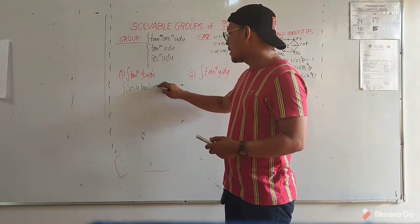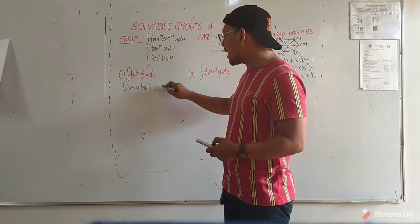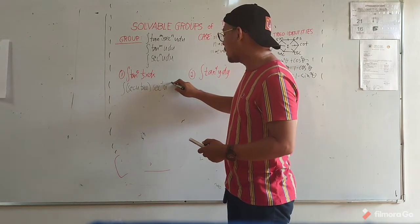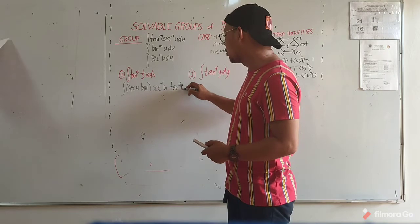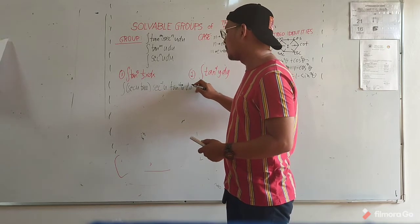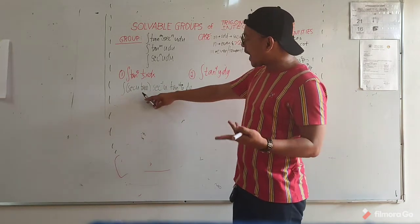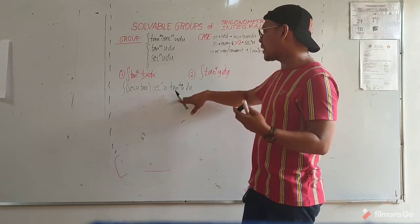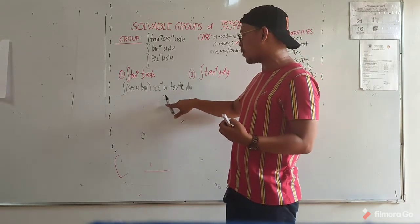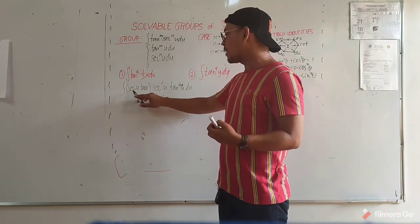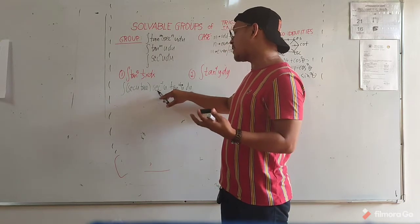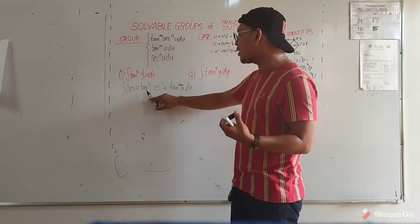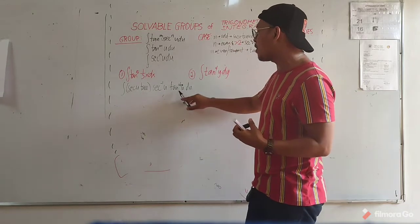Therefore, this is the same as times secant raised to negative 1, u, tan to the fourth u, du. Which equals secant u times secant raised to negative 1 u, times tan to the fourth u, du. Secant u times secant raised to negative 1 u equals 1, and tan times tan to the fourth u equals tan to the fifth.